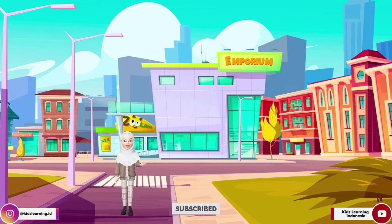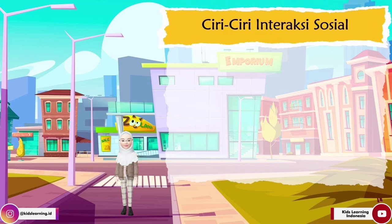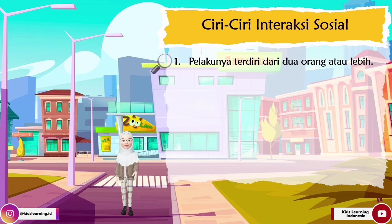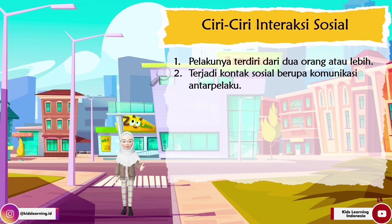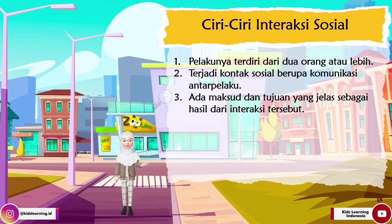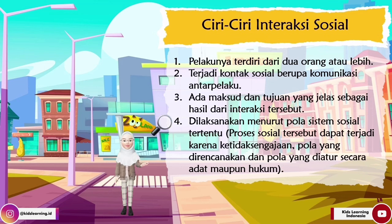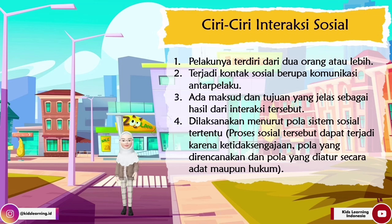Oke, teman-teman, selanjutnya kita akan mengetahui ciri-ciri dari interaksi sosial. Yang pertama, pelakunya harus terdiri dari dua orang atau lebih. Kemudian yang kedua, terjadi kontak sosial berupa komunikasi antar pelaku. Yang ketiga, ada maksud dan tujuan yang jelas sebagai hasil dari interaksi tersebut. Dan yang keempat, dilaksanakan menurut pola sistem sosial tertentu, yaitu proses sosial tersebut dapat terjadi karena ketidaksengajaan, pola yang direncanakan, dan pola yang diatur secara adat maupun hukum.